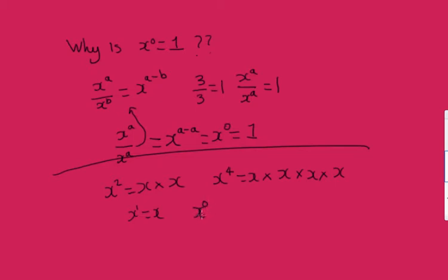It means there's no numbers being multiplied. It's a really strange concept and it's very strange to think that it would equal one. But when we apply the rules of indices and some basic arithmetic, we can show that x to the zero is in fact one.